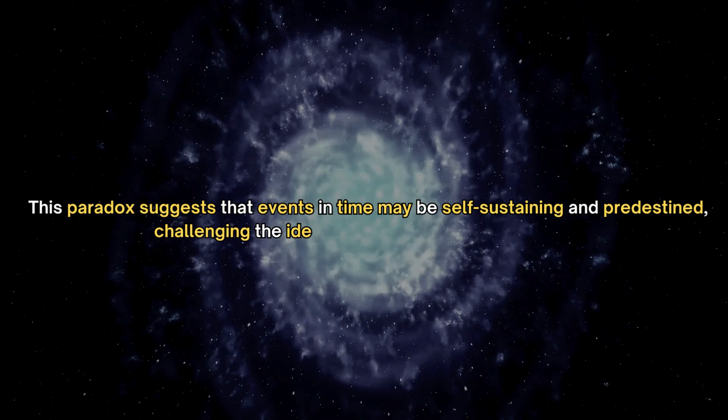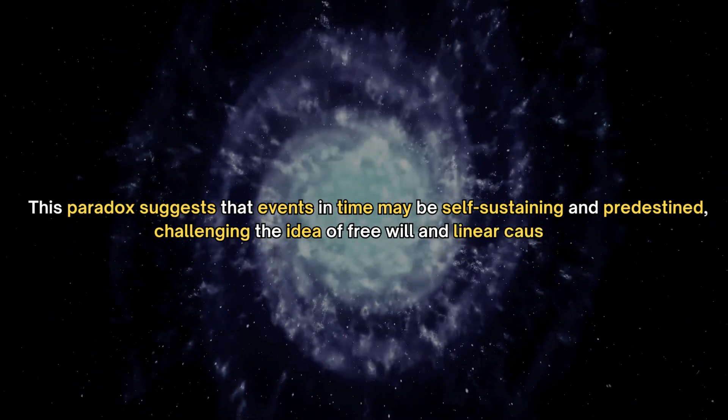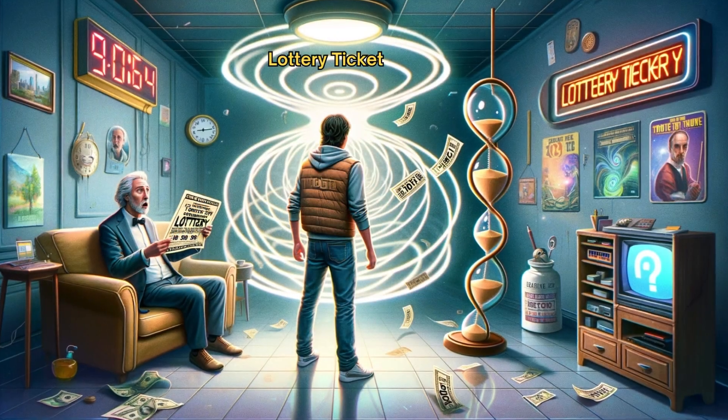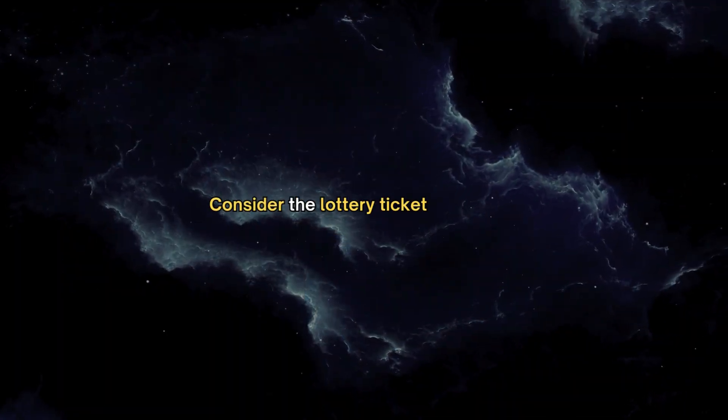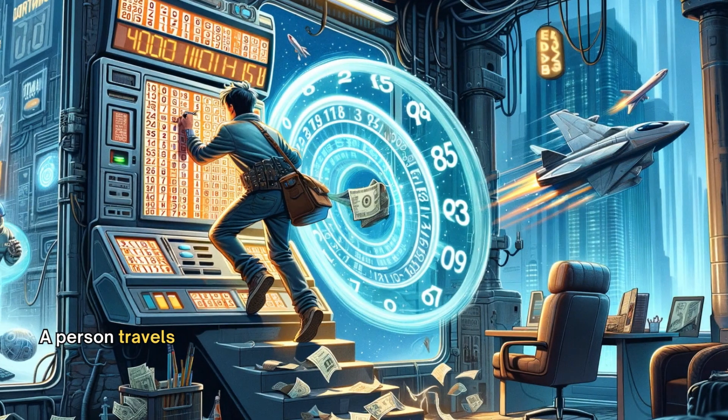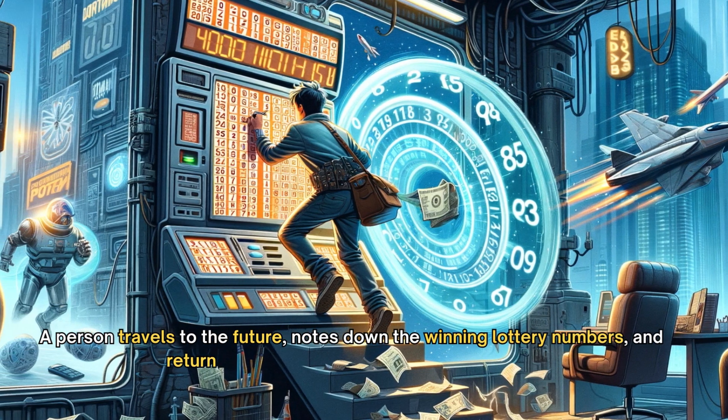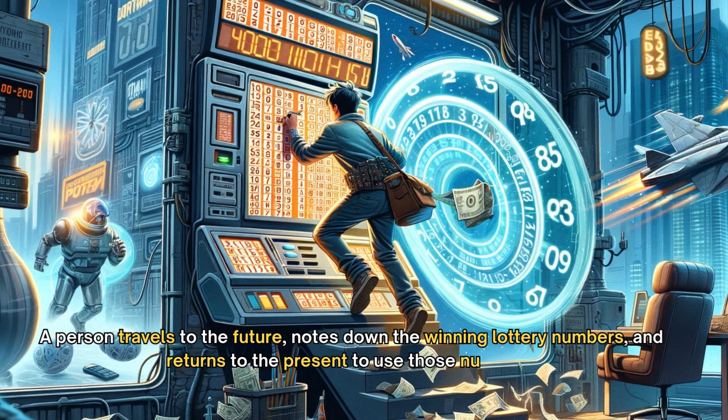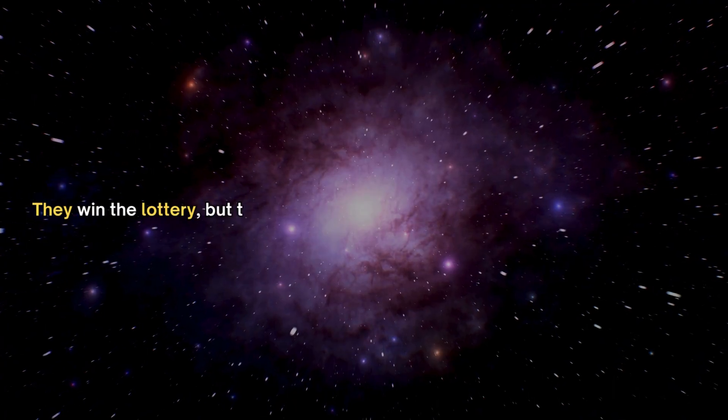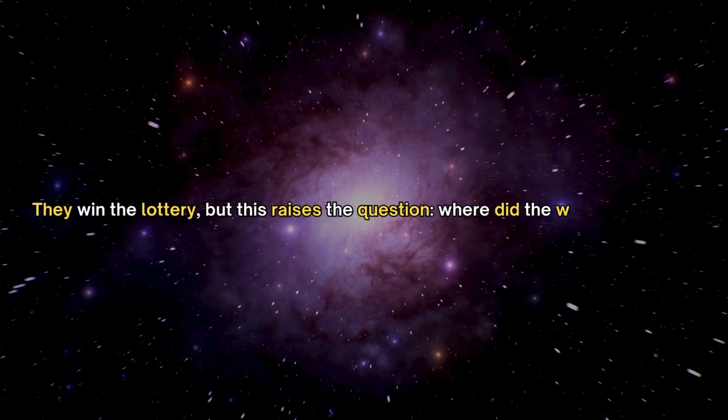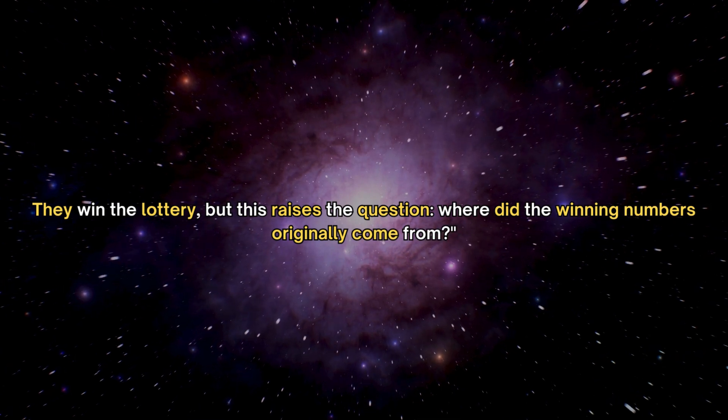Lottery ticket paradox. Consider the lottery ticket paradox. A person travels to the future, notes down the winning lottery numbers, and returns to the present to use those numbers. They win the lottery, but this raises the question: where did the winning numbers originally come from?